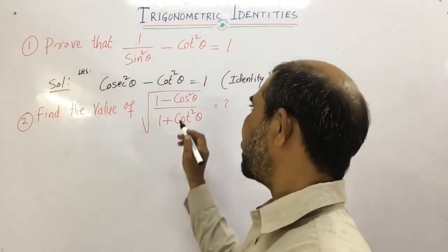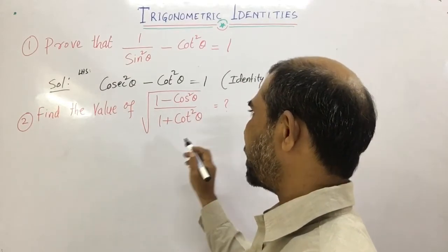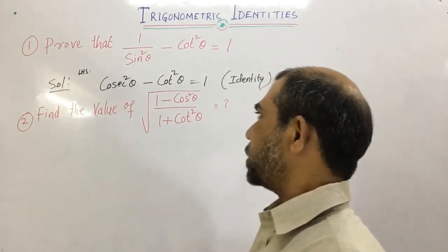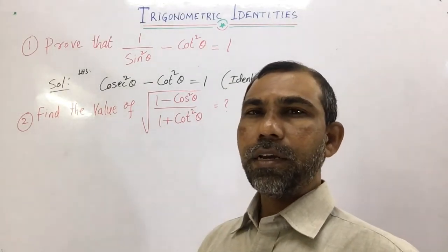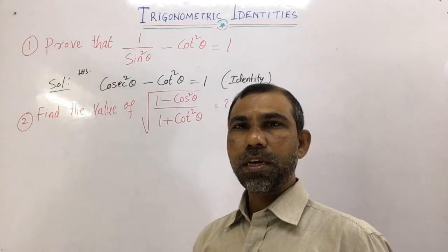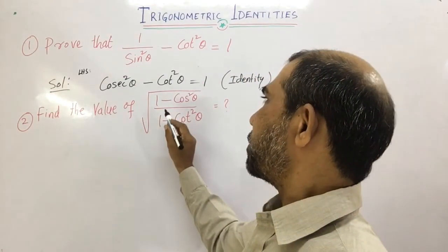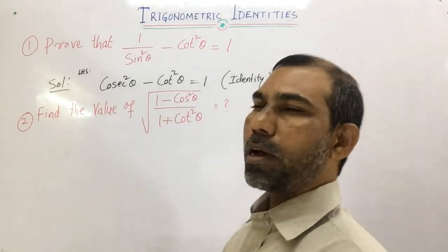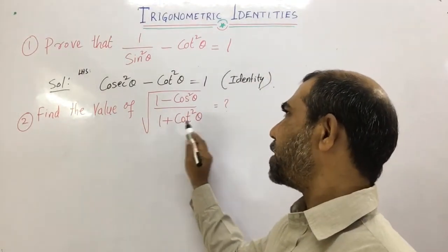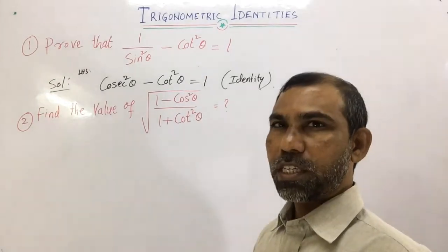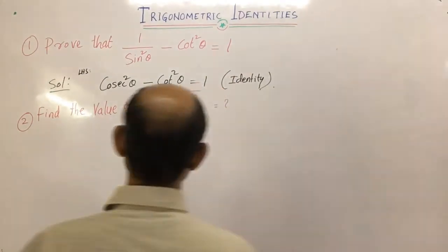Second question: Find the value of √[(1 − cot²θ)/(1 + cot²θ)]. Using the identity sin²θ + cos²θ = 1, we can write 1 − cos²θ as sin²θ. And we know that 1 + cot²θ is cosec²θ. We will substitute these two values.